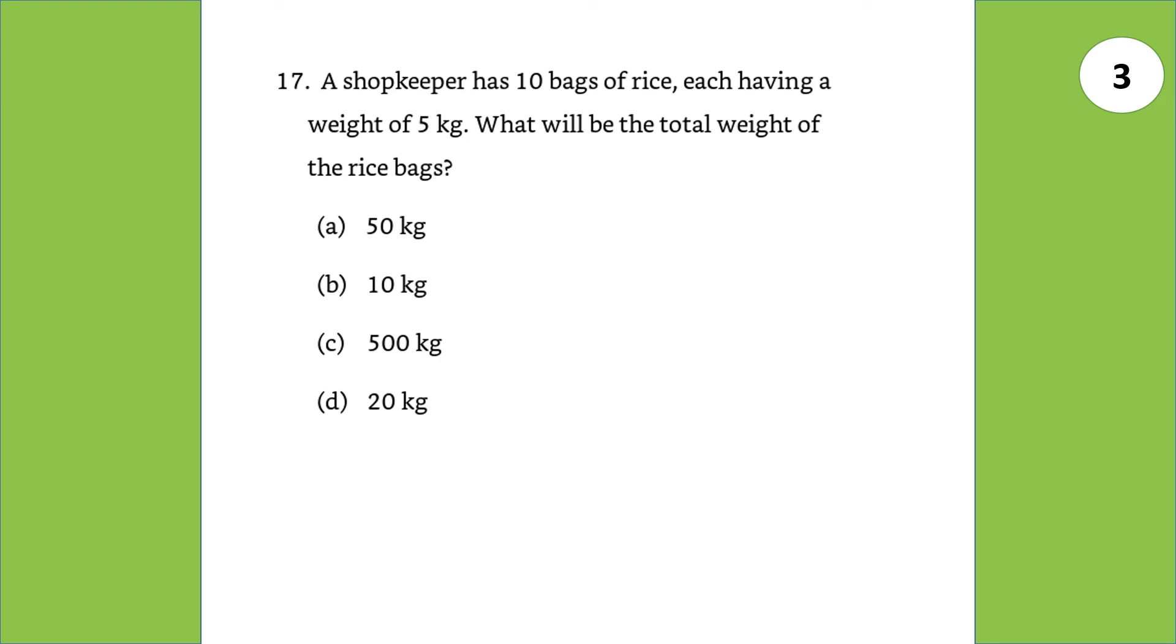A shopkeeper has 10 bags of rice, each having a weight of 5 kg. What will be the total weight of rice bags? Answer 10 multiplied by 5 is 50 kg.